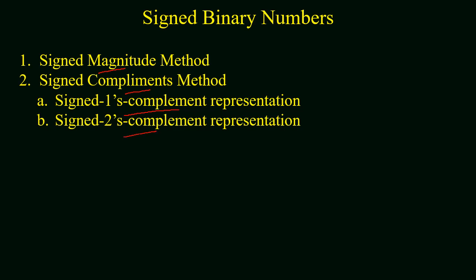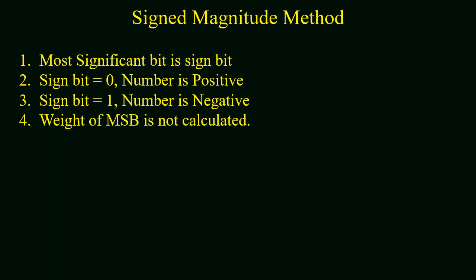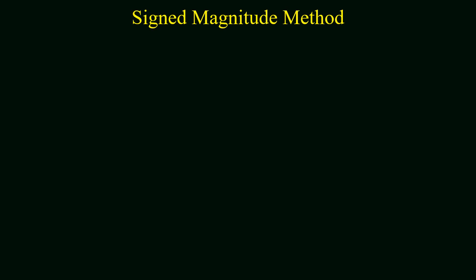Now we will study the sign magnitude method. In the sign magnitude method, the most significant bit is assumed to be a sign bit. If the sign bit is equal to 0, the binary number will be positive. If the sign bit is equal to 1, the number will be negative. During calculation, the weight of the sign bit or most significant bit is not calculated.